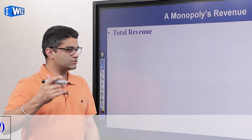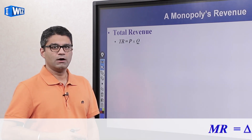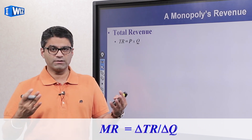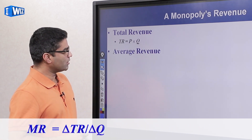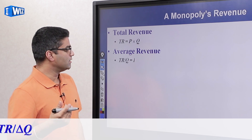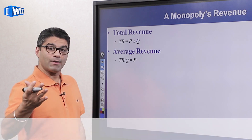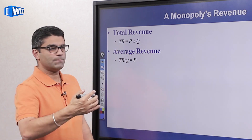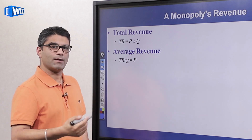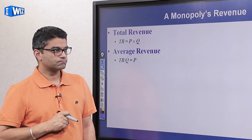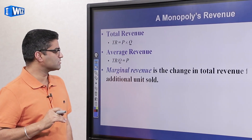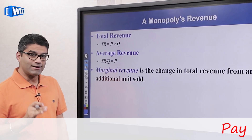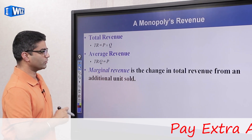Total revenue is easy — hopefully you remember it's just price times quantity. How much a monopolist charges times how much they sell gives total revenue. Average revenue, which is total revenue divided by quantity, equals P×Q divided by Q, which gives you price — so that's the same as under perfect competition. The one that's going to be very different and very important to understand is marginal revenue.